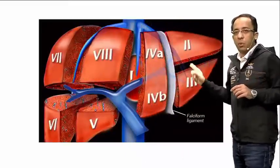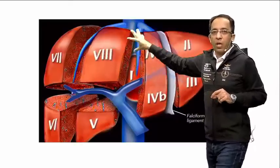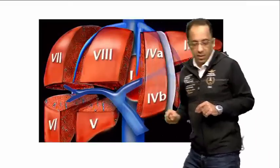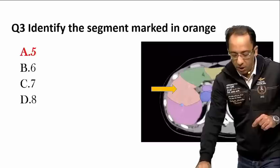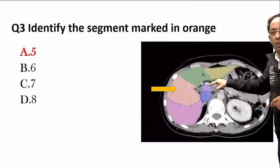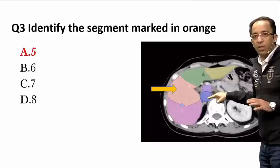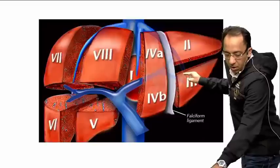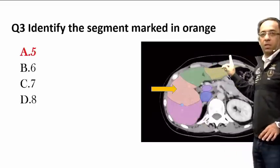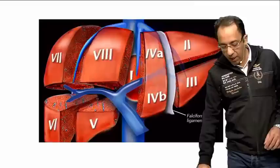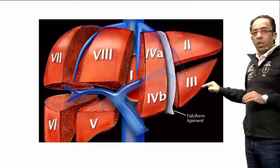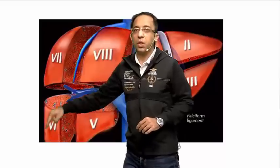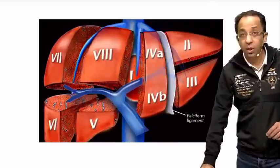Let's imagine a cross-section. If the section is above the level of the portal vein, you will see segments 2, 4a, 8, and 7. If below, you will see 3, 4b, 5, and 6. On the CT shown, the blue structure is the portal vein and this is the IVC — so we are at portal vein level. The segment identified was segment 5. Going around: 5, 6, 4b, 3. In the right lobe we label it 5, 6 posteriorly, then 7 and 8.